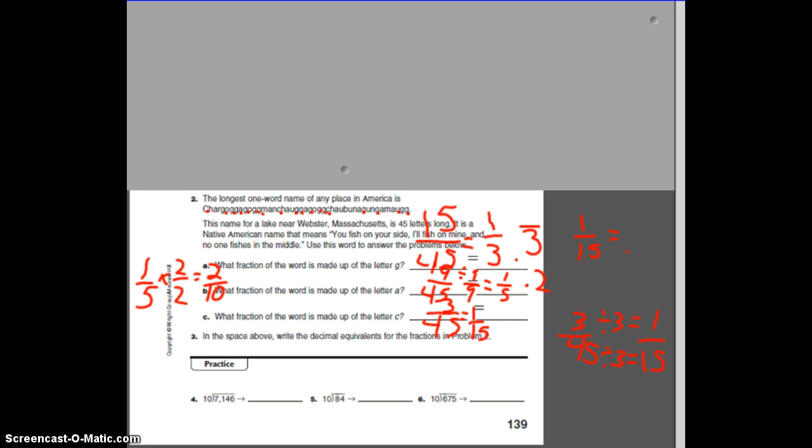1 fifteenth, if you divide 1 on your calculator, you would do 1 divided by 15. And you will get a decimal of 0.066666666. It'll go right off of your calculator. To show that, we put that little repeat sign on there. So 0.06 repeating.